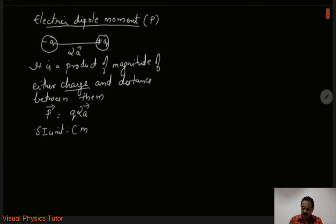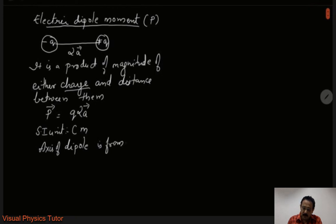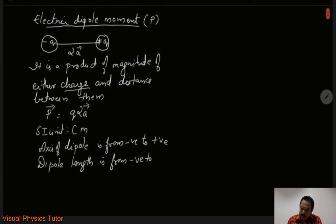Apart from this, there are three more basic facts to learn. One is about the axis of the dipole — its direction is from negative to positive. Similarly, the dipole length is also from negative to positive, and the dipole moment is also from negative to positive.